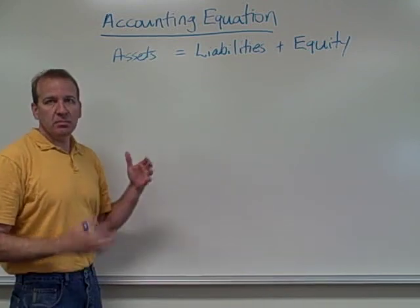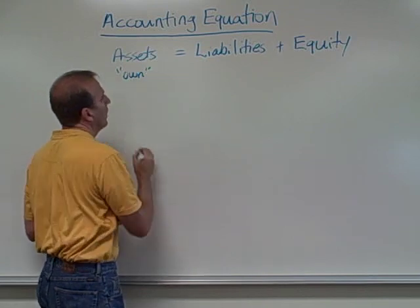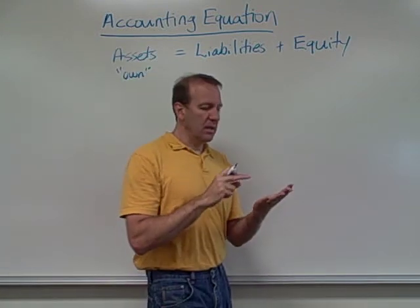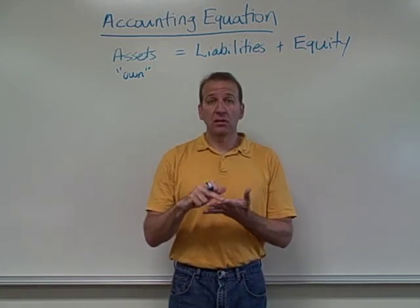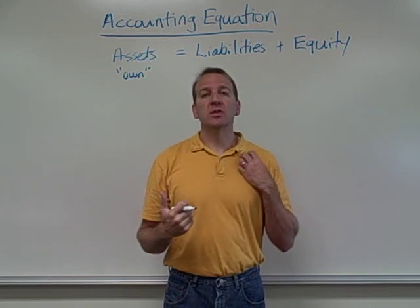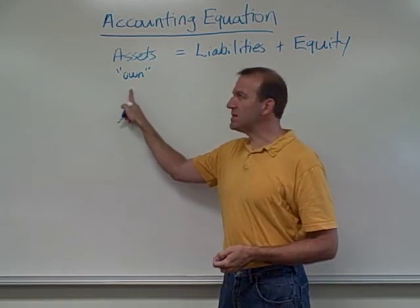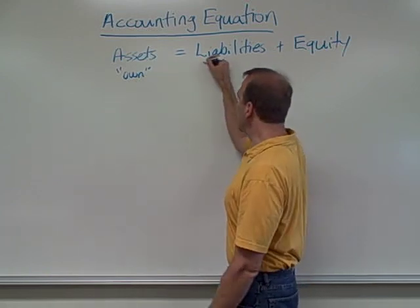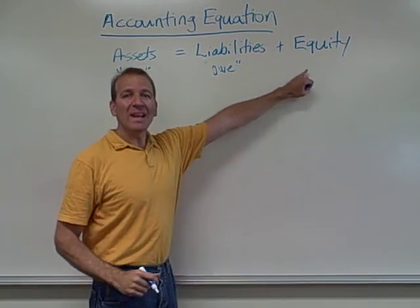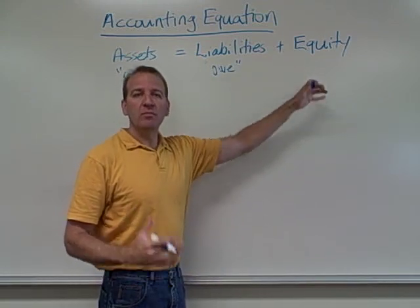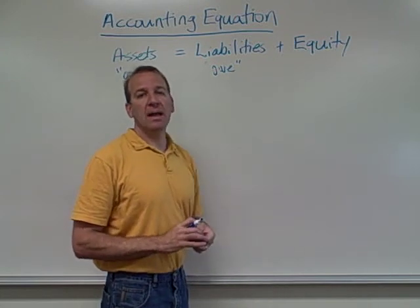Assets are simply things that we own. How do we get these assets, which could be cash, supplies, buildings, machinery, equipment, computers — all sorts of things that we own in our business? Well, that's what's on the other side of our equation. We either borrowed money to get them, or through equity in the company — profits generated or owners contributing cash into the company in order to buy assets.